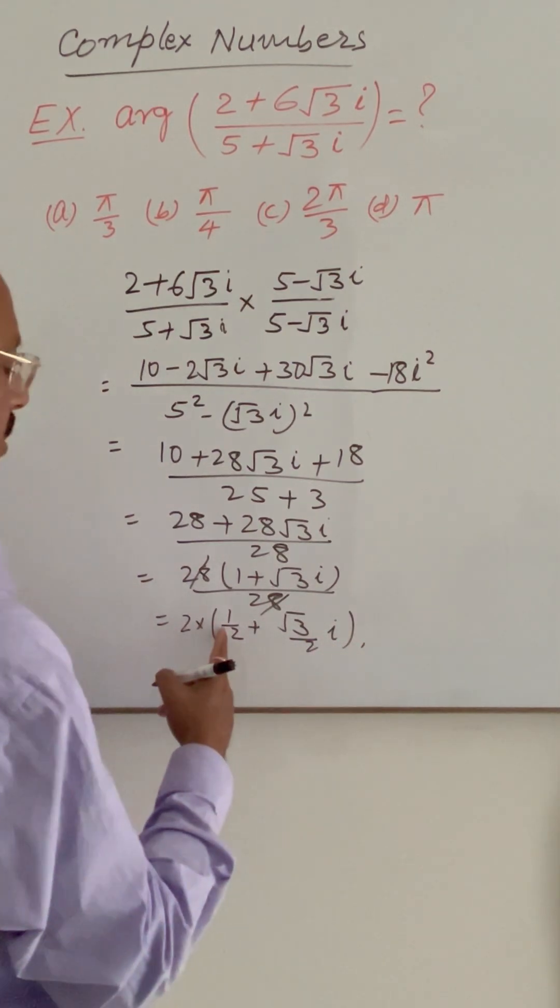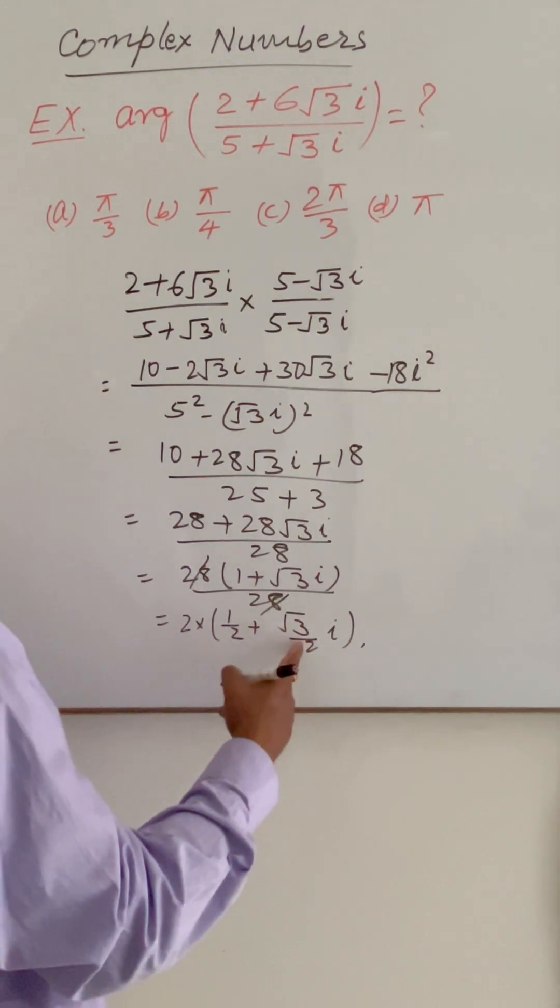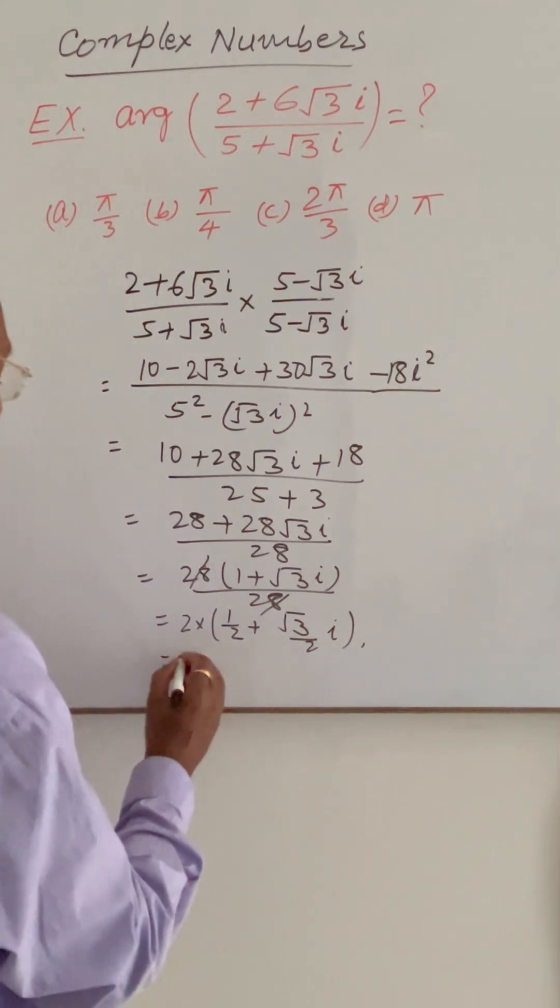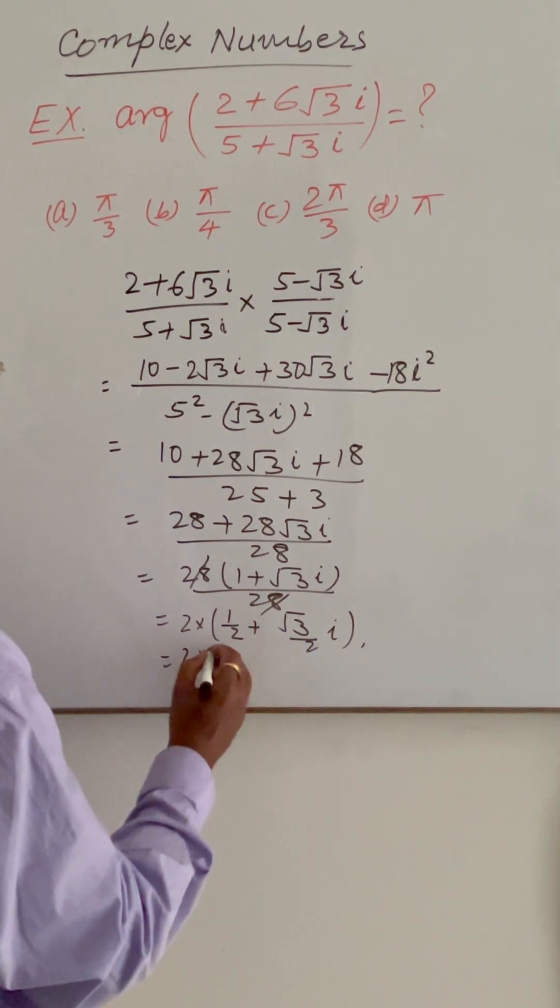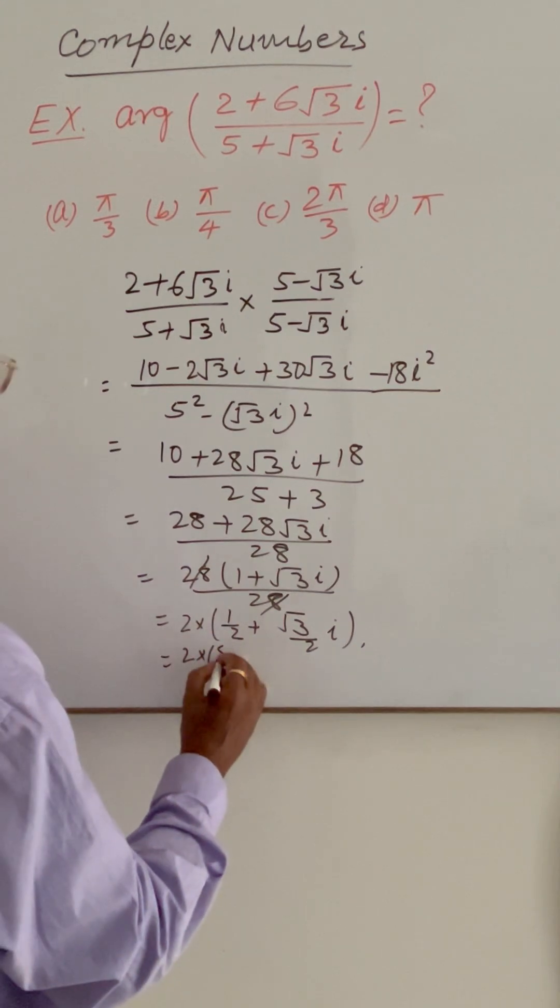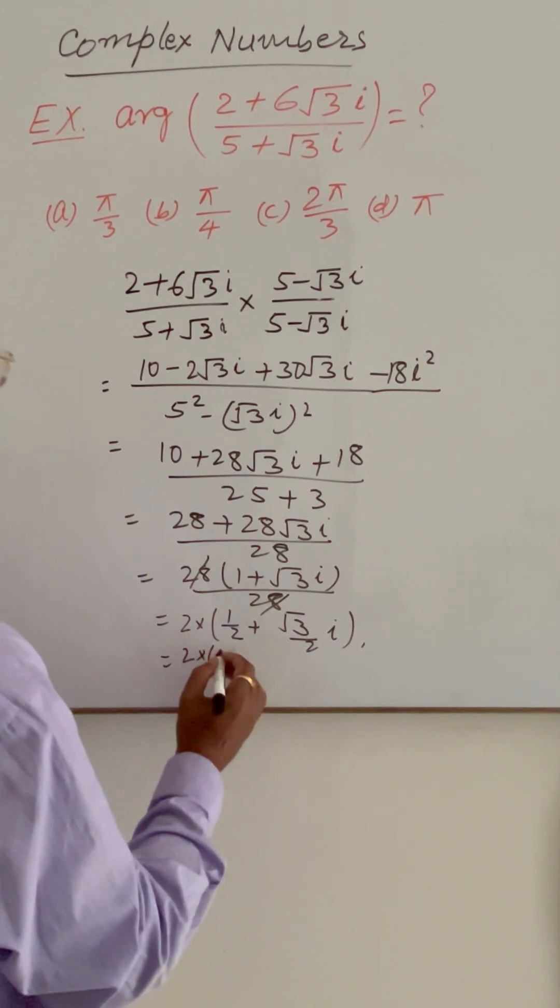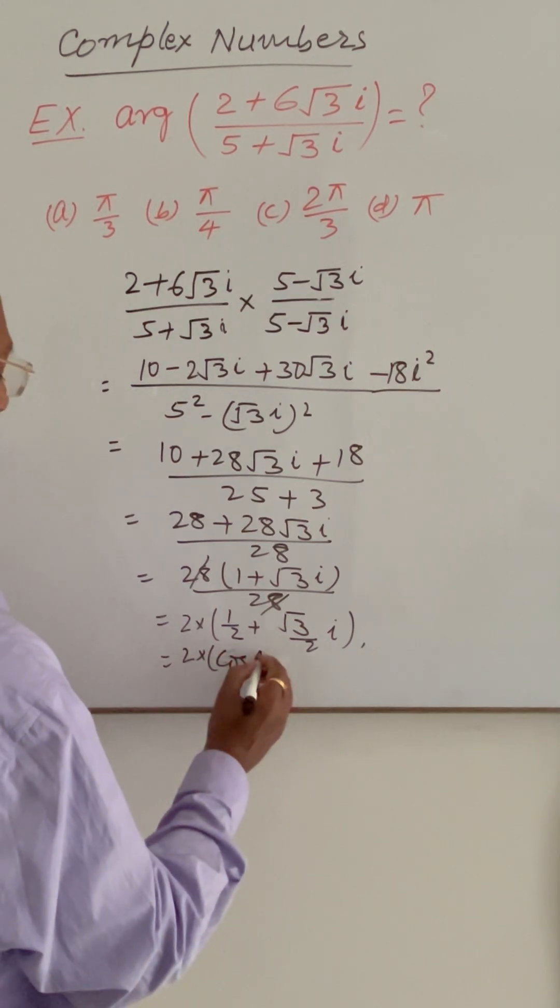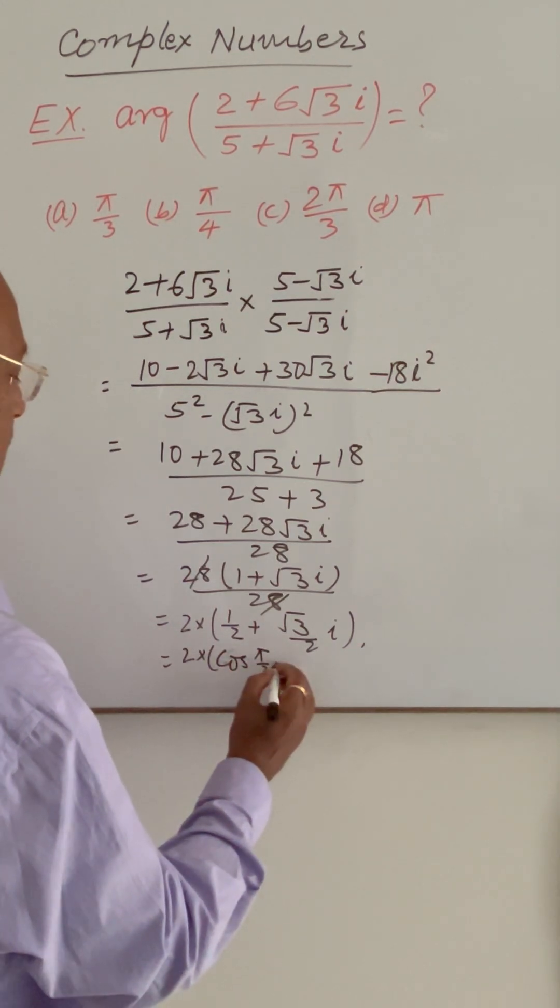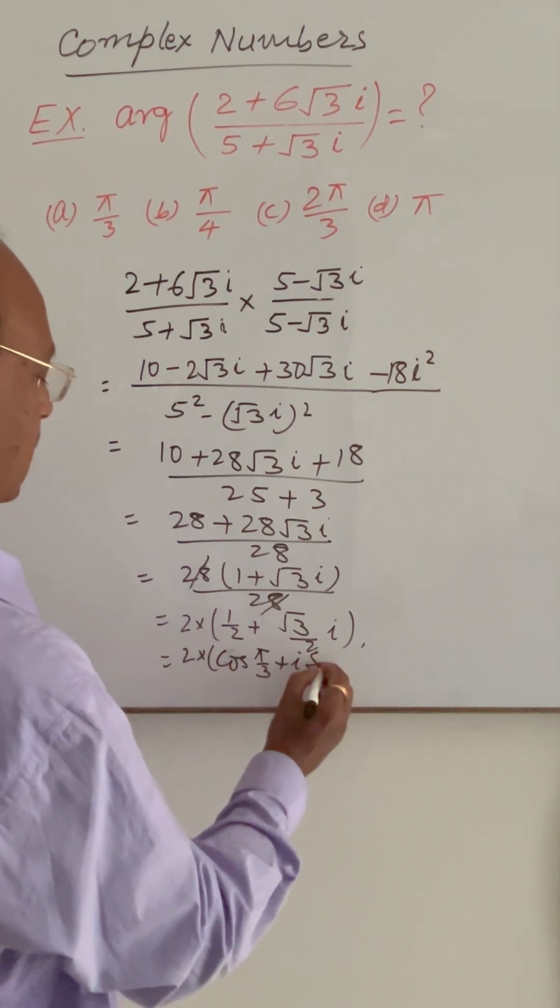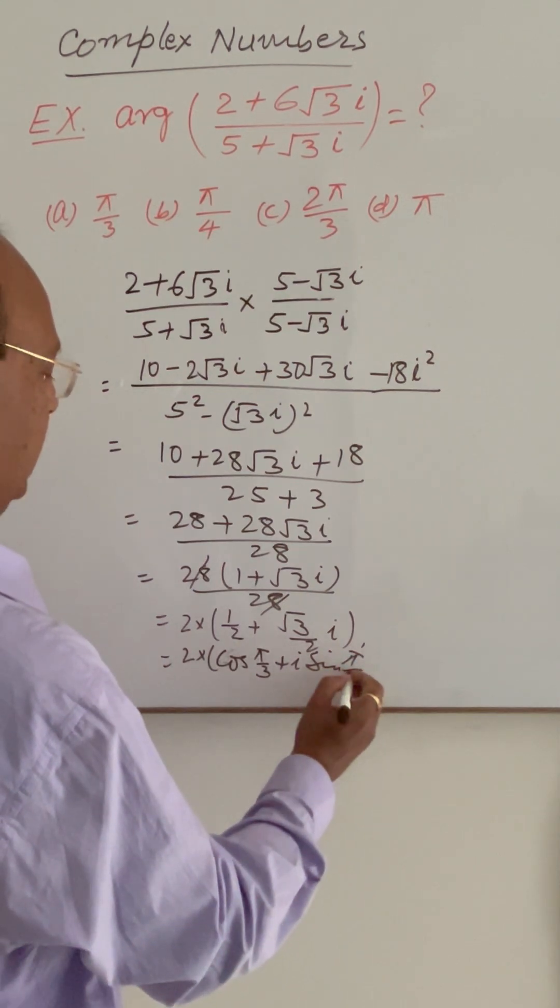Here half and root 3 by 2i. So this is 2 into half is cos pi by 3 plus i sin pi by 3.